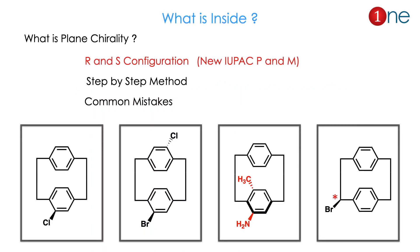What is inside this video? First, let us see what is plane chirality, then the R and S configuration of it. In modern nomenclature it is called P and M configuration. Then we will see how we can do this step by step, and cover common mistakes and confusions, with a few prominent examples that we will discuss.